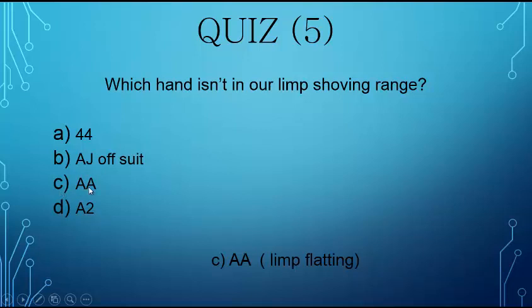C is going to be pocket aces, and this is a hand where, same thing with aces, kings, and even queens sometimes, where we want to limp. We want to limp flat because it helps us balance out our mid-range value.